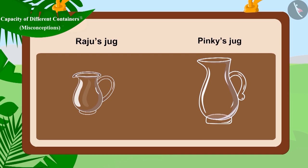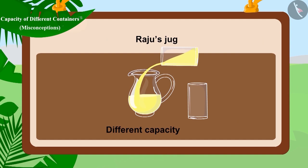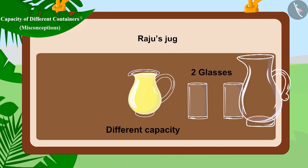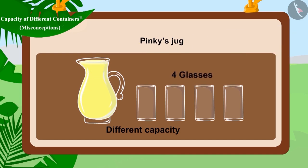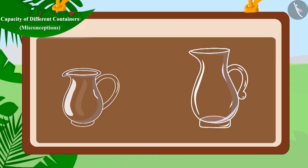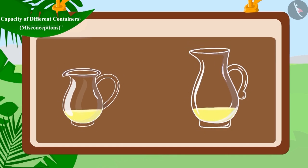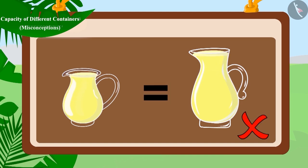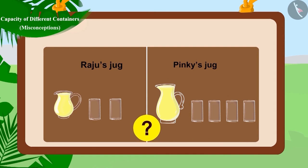Even though both containers are the same type — a jug — the capacity of these containers is different. The capacity of Raju's jug is two glasses and that of Pinky's jug is four glasses. Remember, children: the same type of containers may not always have the same capacity.